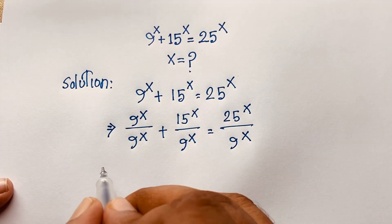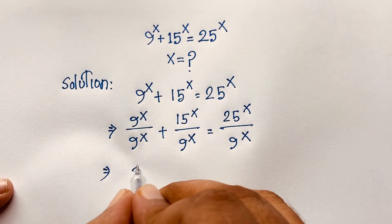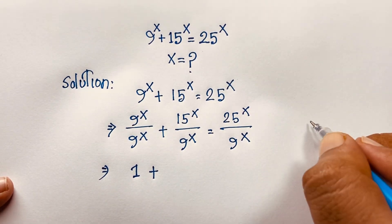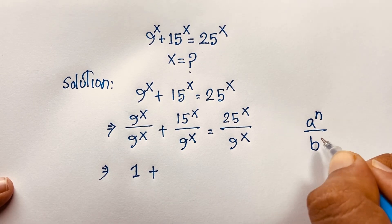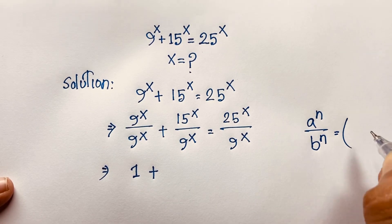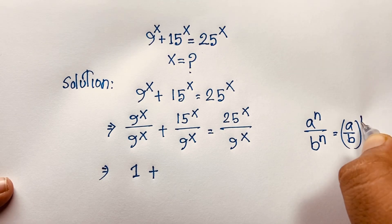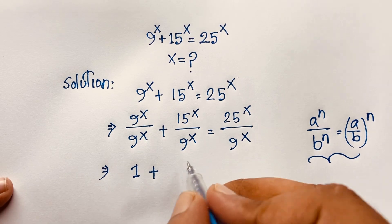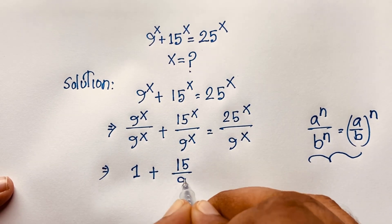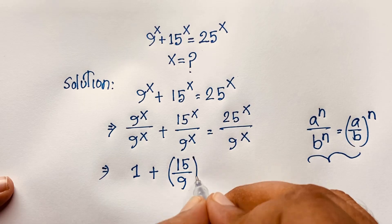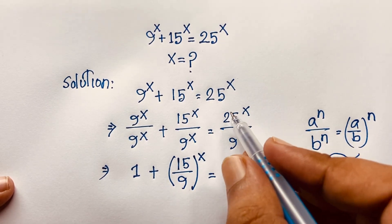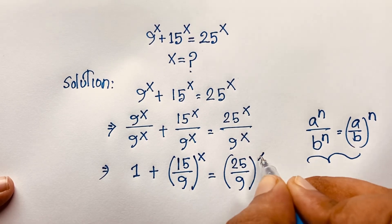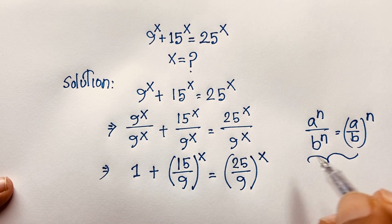Now this expression — 9^x divided by 9^x — will be 1 plus... and for this expression, we know that a^n over b^n equals (a/b)^n. So if I apply this math formula here, it will be (15/9)^x on the left and (25/9)^x on the right. I apply this math formula here.